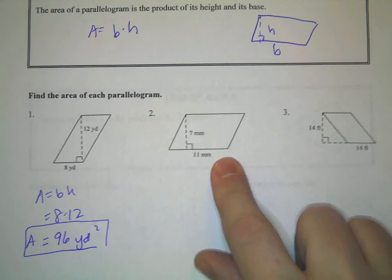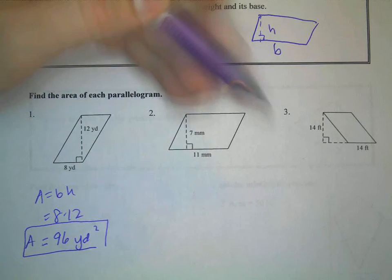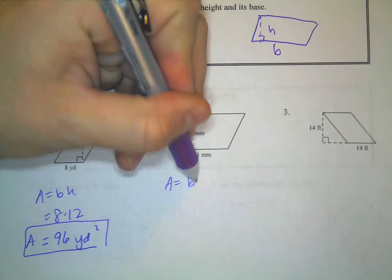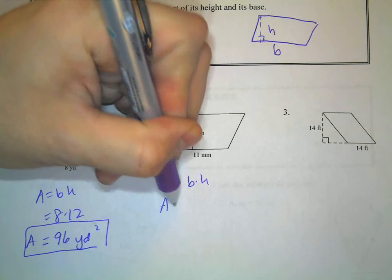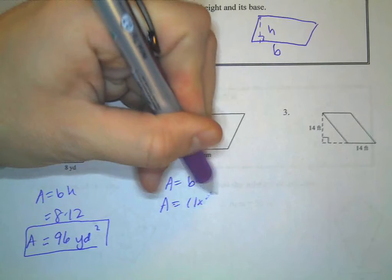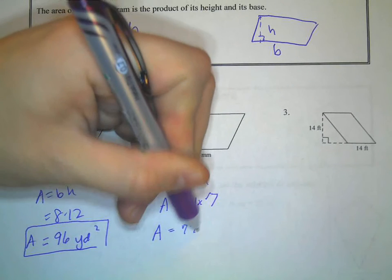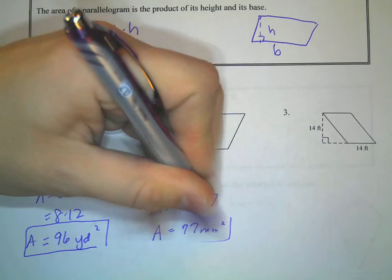Okay. In this one, the base is 11, the height is 7. So base times height would be 11 times 7. So the area is 77 square millimeters.